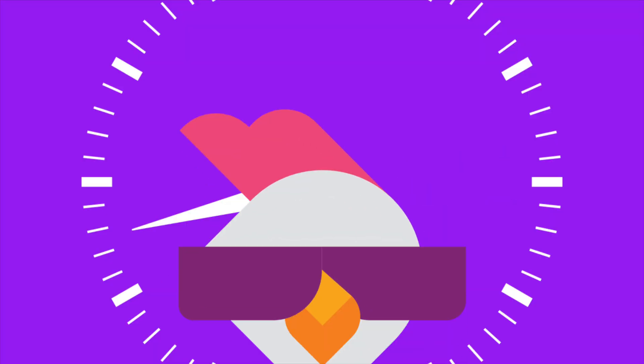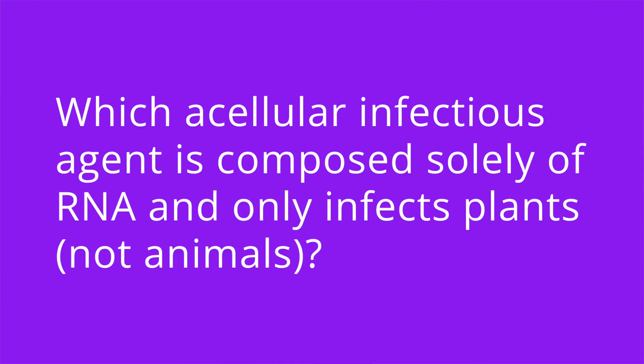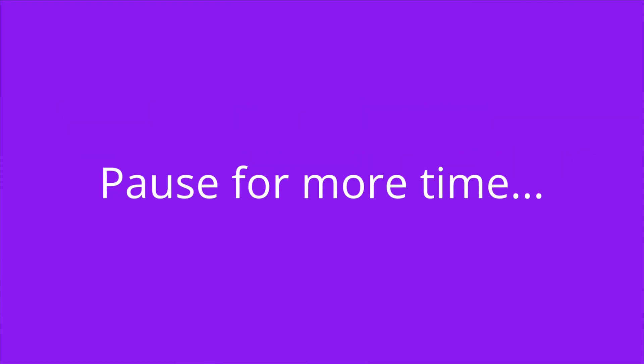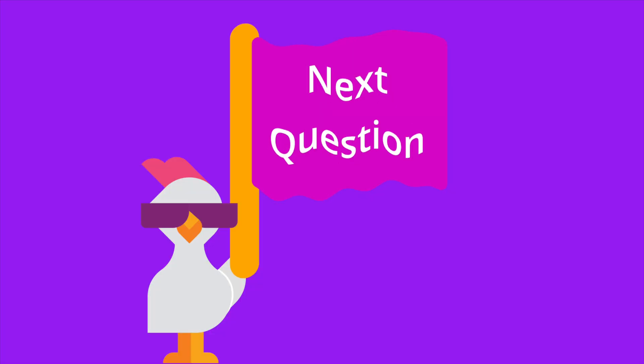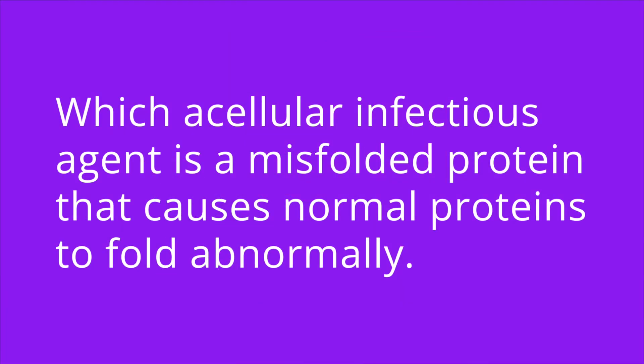It's quiz time, and I have three questions for you. Question number one: which acellular infectious agent is composed solely of RNA and only infects plants, not animals? The answer is a viroid. Question number two: which acellular infectious agent is a misfolded protein that causes normal proteins to fold abnormally? The answer is a prion.